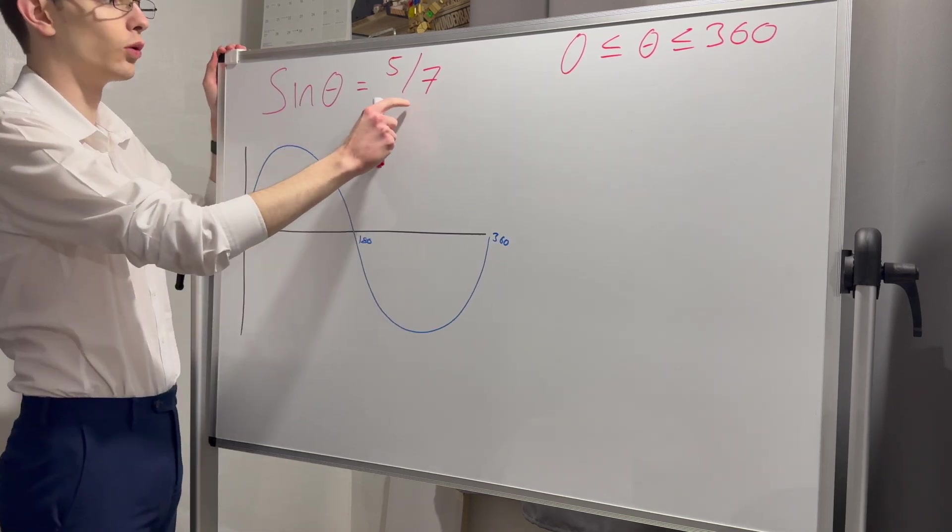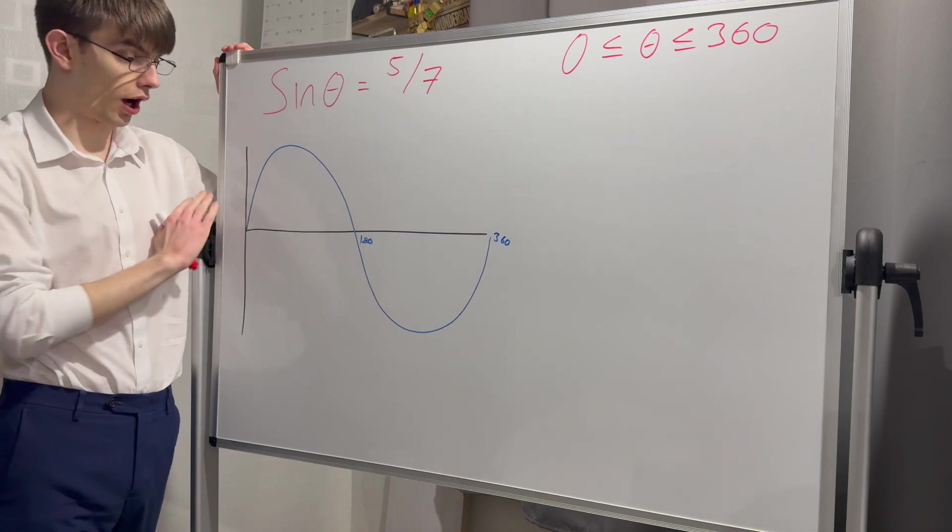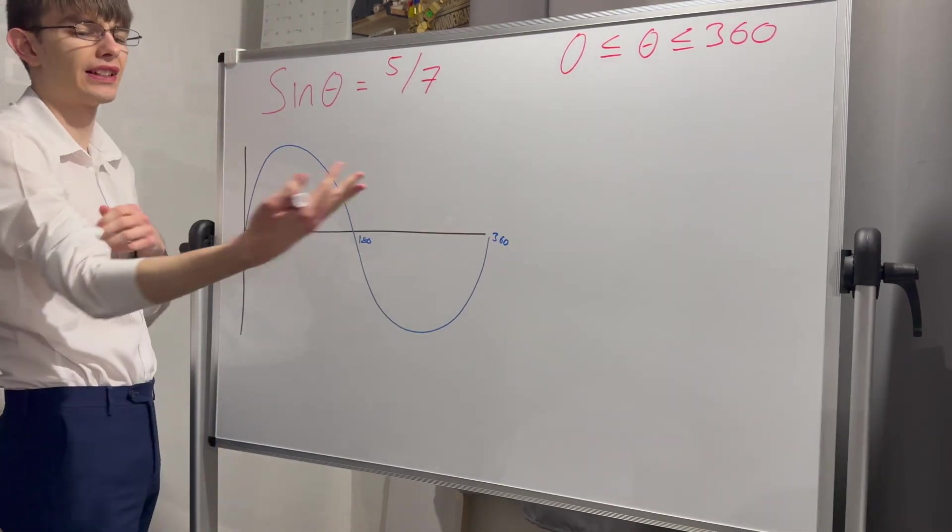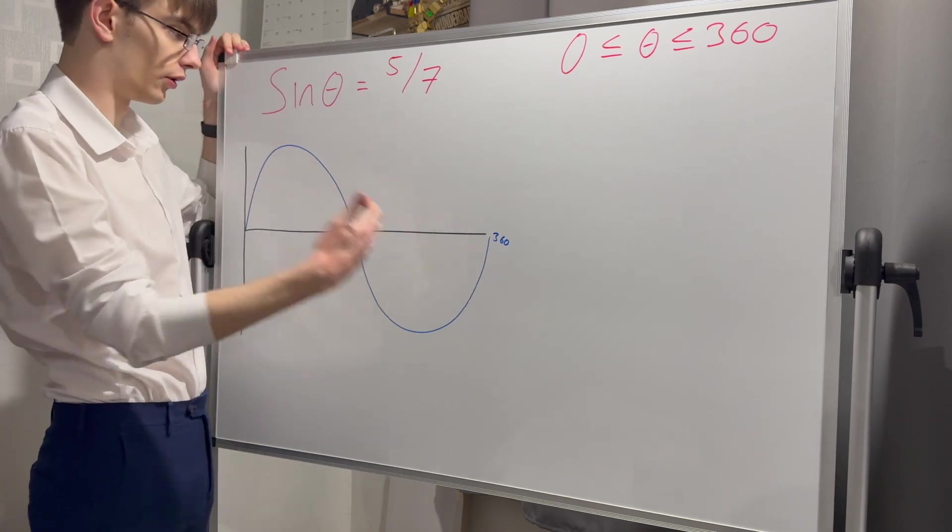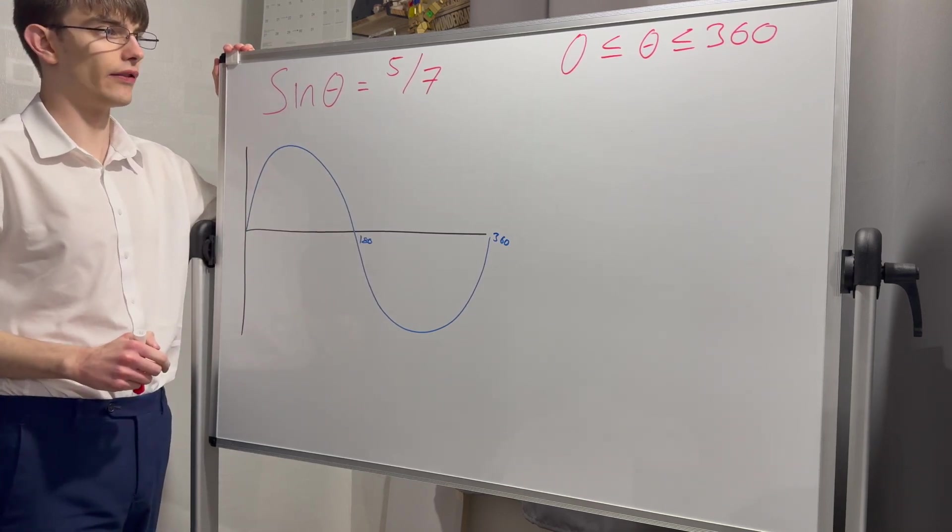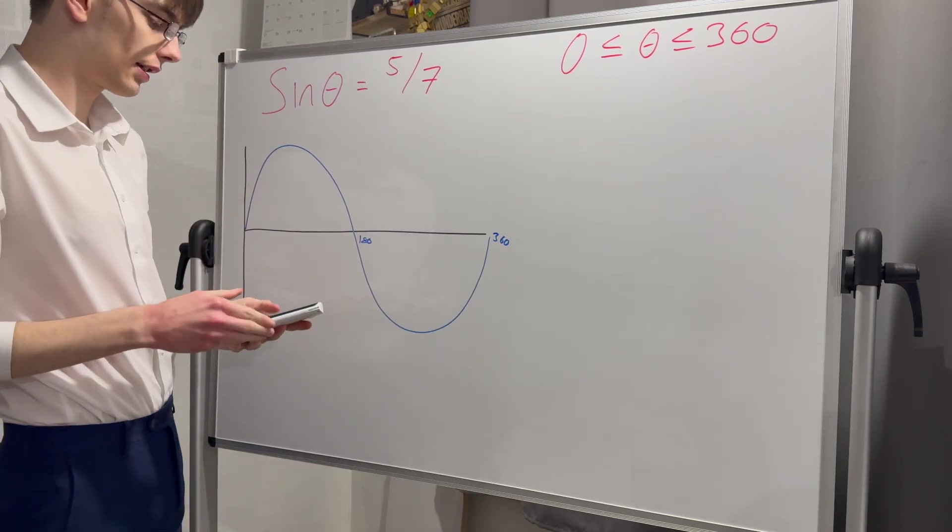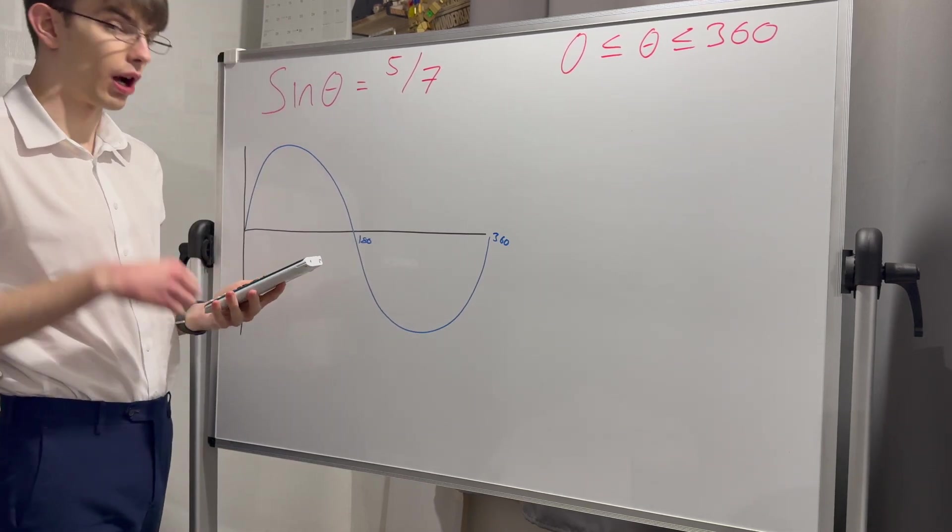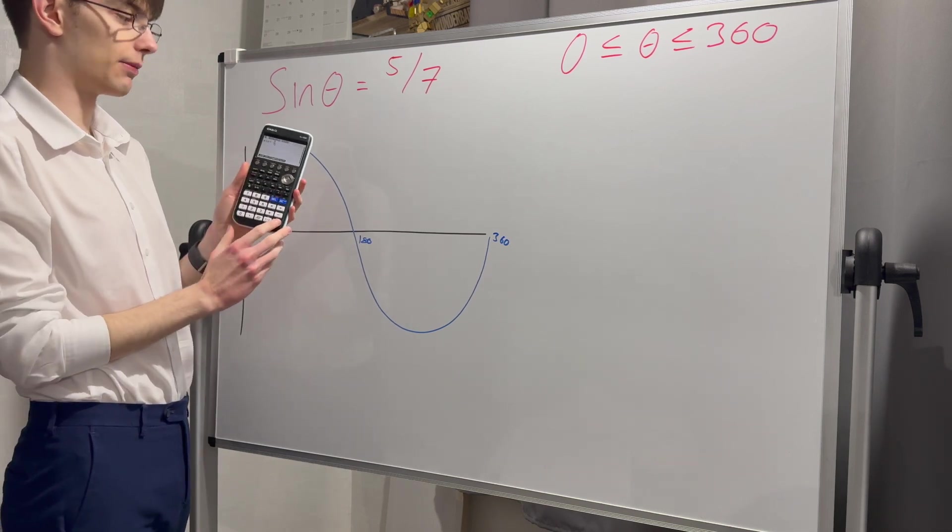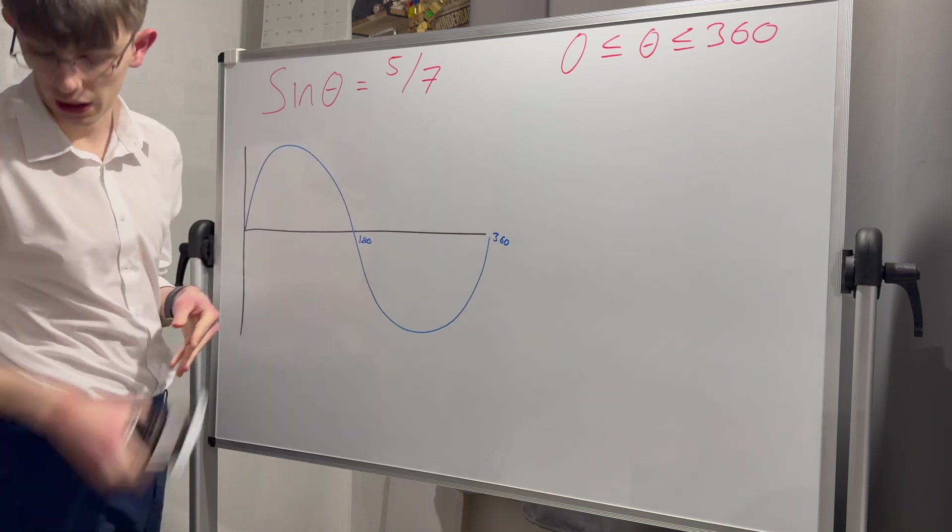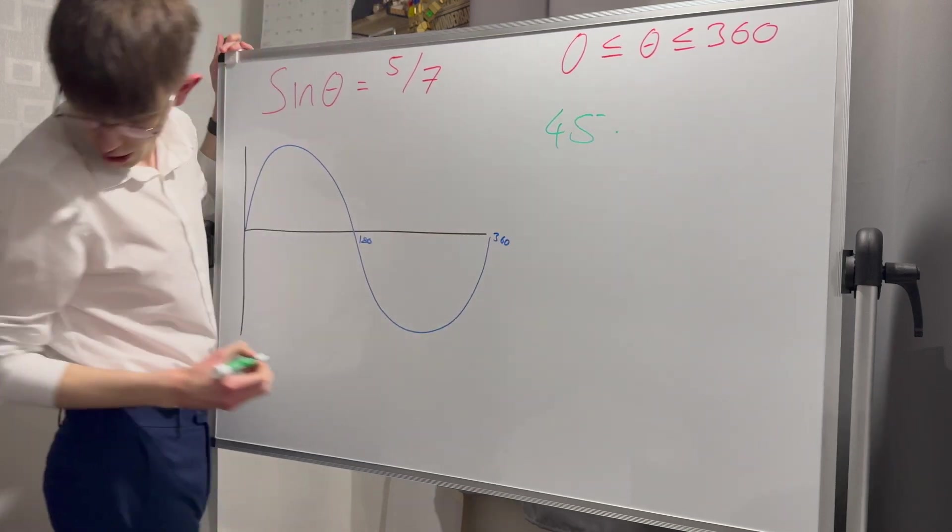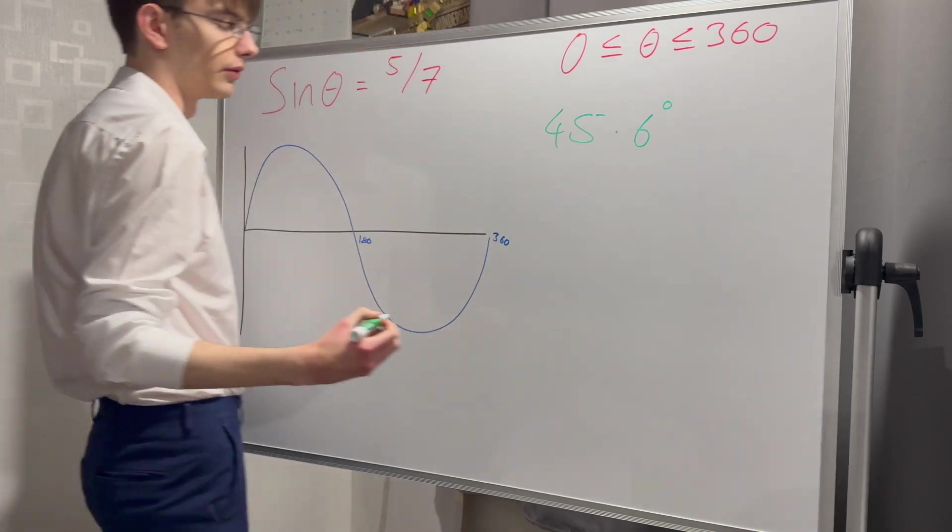Let's start off with sine theta equals five over seven. I've got my sine graph drawn out here between zero and 360 degrees. I'm going to start off using my calculator to find my principal value. The principal value is if I simply type in the inverse sine of five divided by seven into my calculator, I get 45.6 degrees.